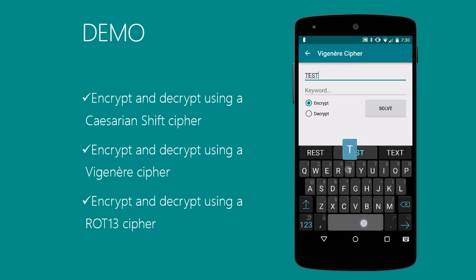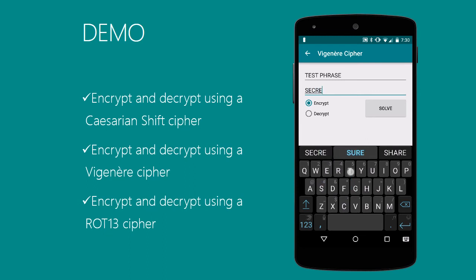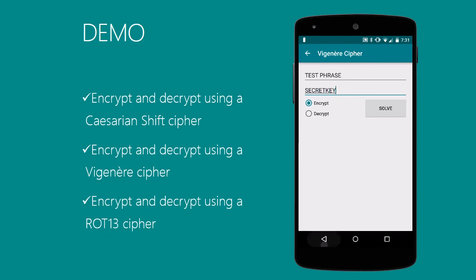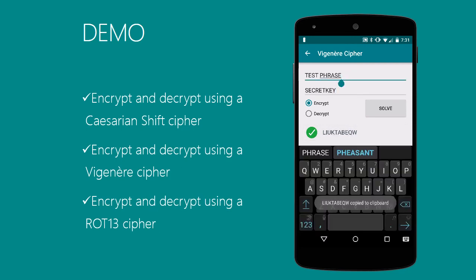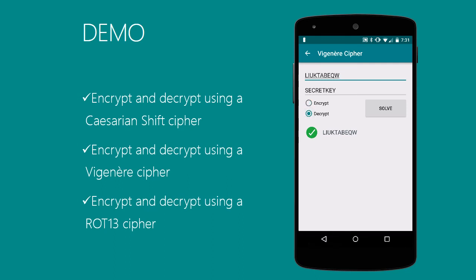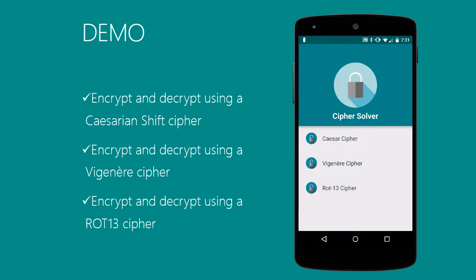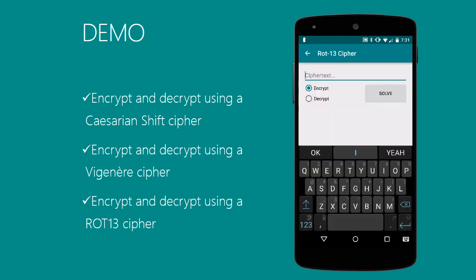Next we can do the Vigenère cipher. This one uses a cipher text and a keyword, so we can enter 'test phrase' and 'secret key' as our keyword. We encrypt using that and get a long string, and then using that same secret key we can easily decrypt it and get our original message, which was 'test phrase.'